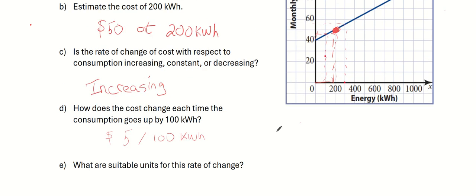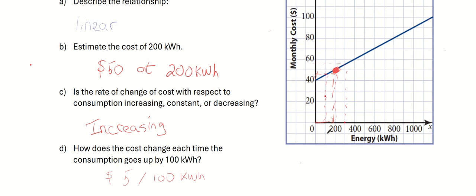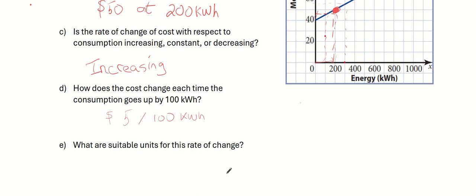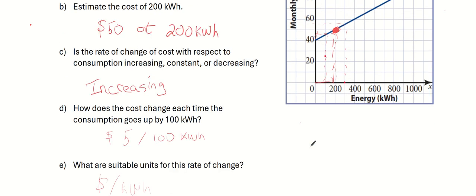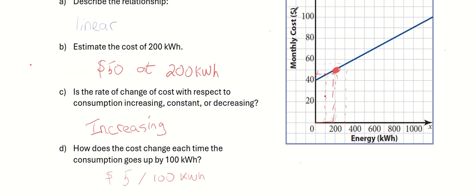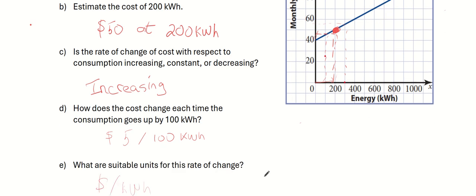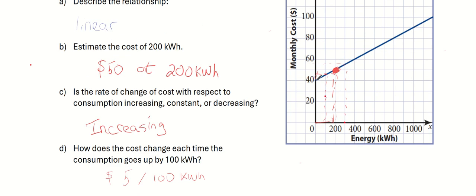What are suitable units for this rate of change? That's an easy one — just look at the units on the axes. The y-axis is in dollars, and the x-axis is in kilowatts per hour. So the units for the rate of change would be dollars per kilowatt hour. The units for rate of change will always be the y units over the x units.